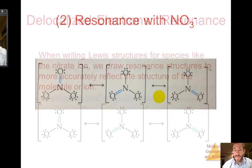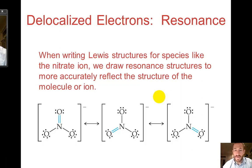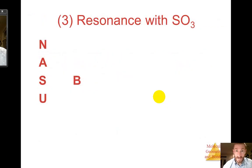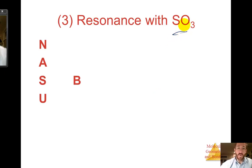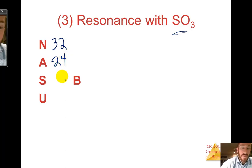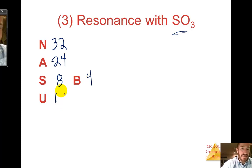Let's do sulfur trioxide. Using the same Nozbe method: none of these elements are hydrogen, so each needs 8. Eight times 4 is 32 for the number needed. Sulfur and oxygen are in the same family and both have 6 valence electrons, so 6 times 4 is 24 available. Subtracting: 32 minus 24 gives us 8 shared, meaning 4 bonds. The number unshared is 16 — the same numbers as nitrate.